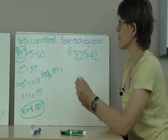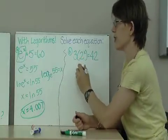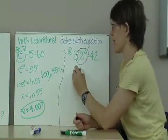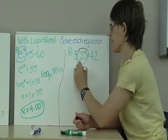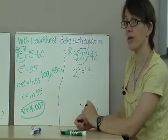this problem is going to involve change of base. So first step to isolate 2 to the x power, I'll divide both sides by 3. This gives me 2 to the x equals 14.